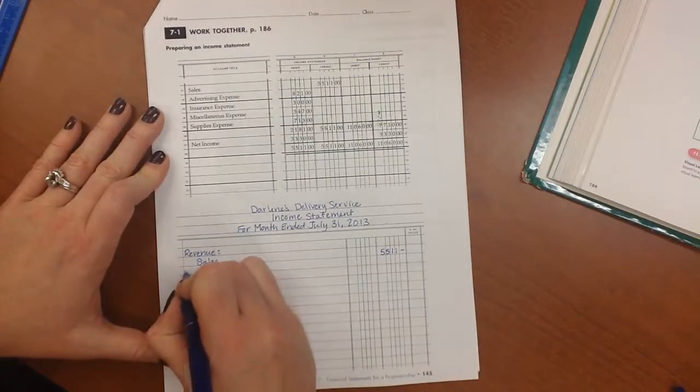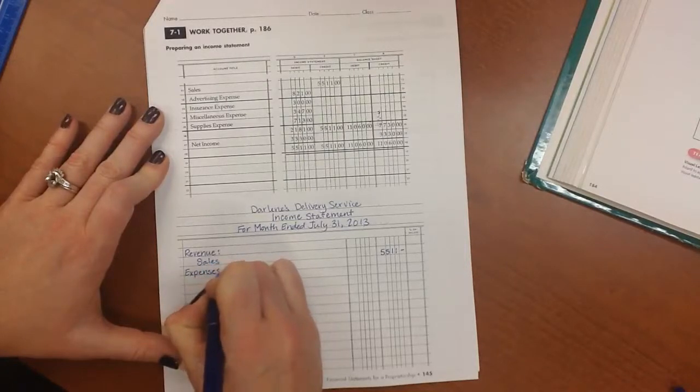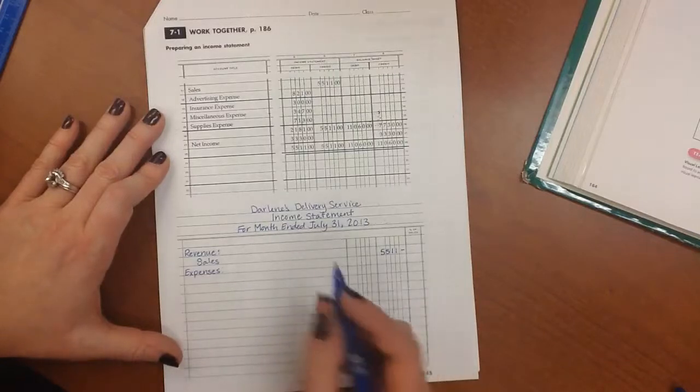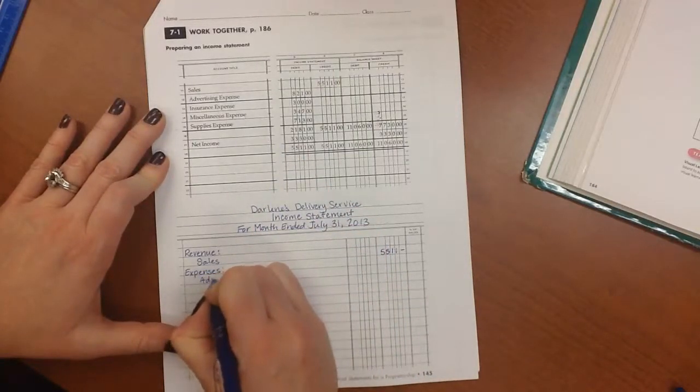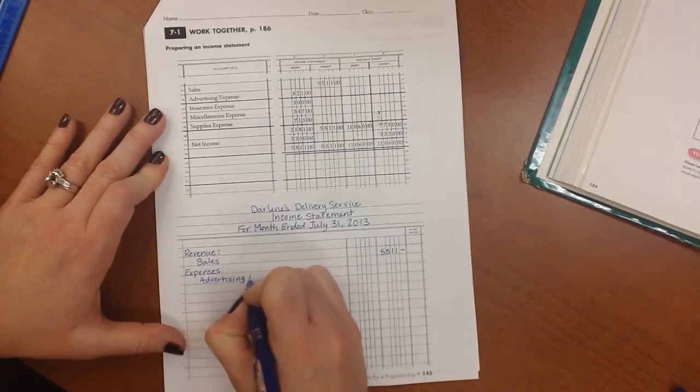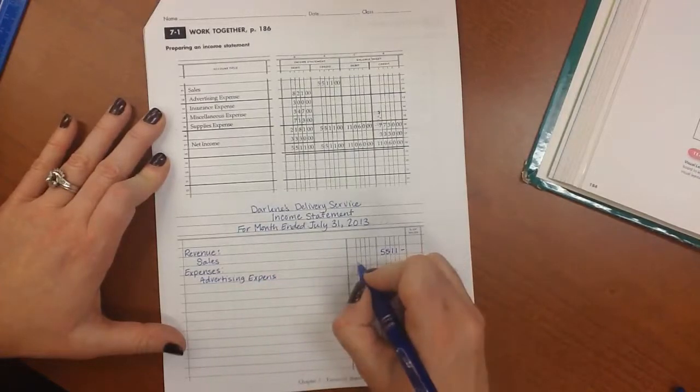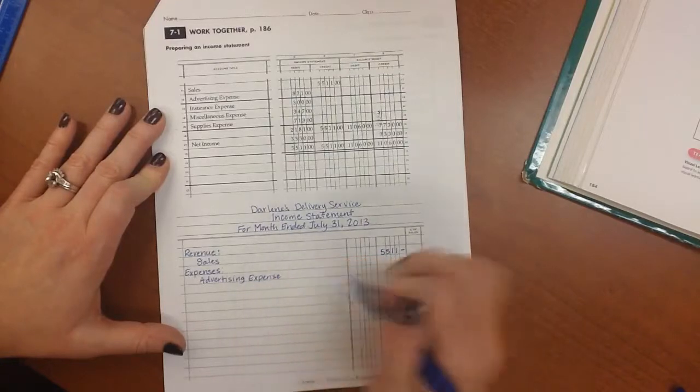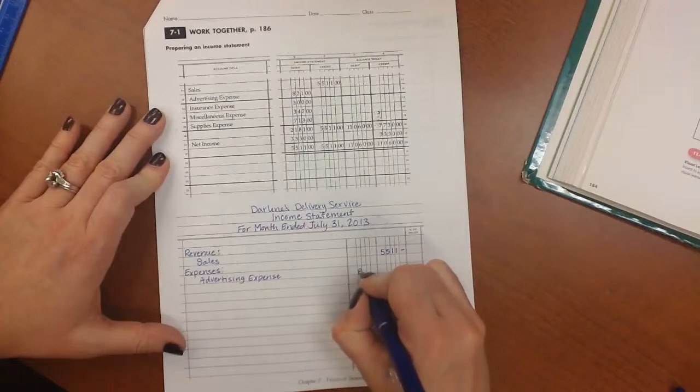Then we put our next side heading which is expenses and that goes all the way against the margin. And then we're going to list our expense accounts. And because we have more than one we are going to be creating a total. So we're going to write the amount in the first column here.